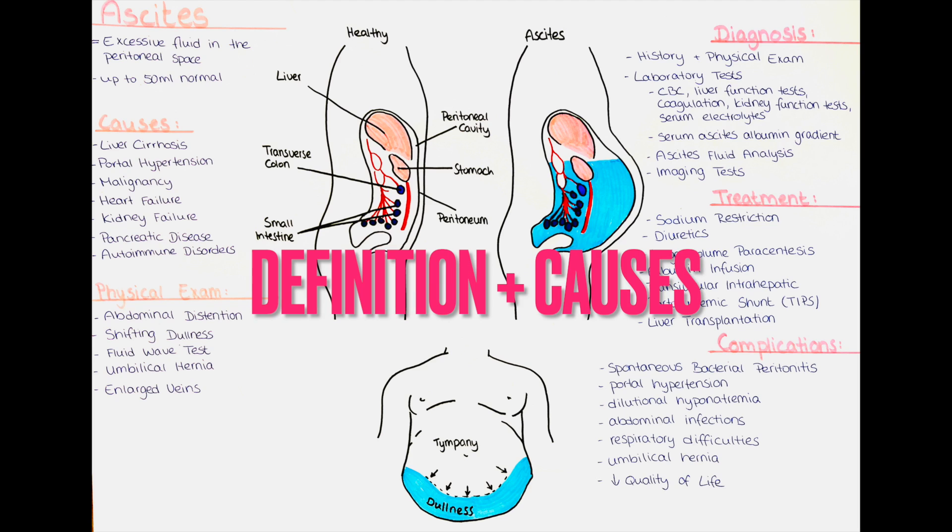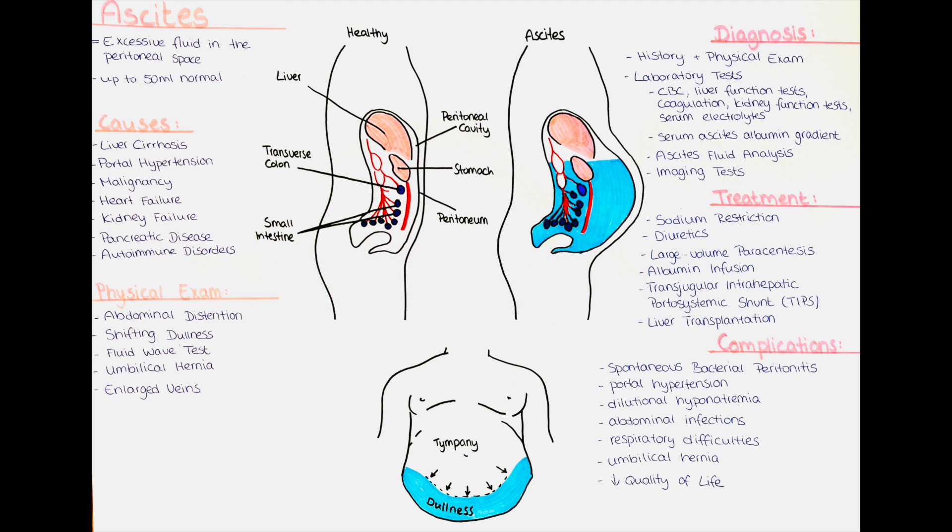What is ascites and why does it develop? Ascites refers to the abnormal accumulation of fluid within the abdominal cavity. It is characterized by the presence of excessive fluid in the peritoneal space, which is the space between the abdominal organs and the inner lining of the abdominal wall called peritoneum. Ascites can be a sign of an underlying medical condition and is often associated with liver disease, particularly advanced liver cirrhosis.